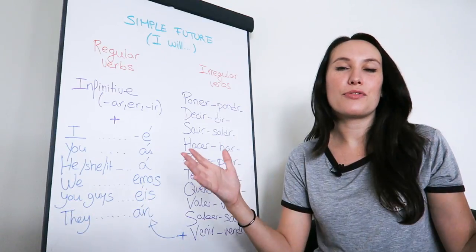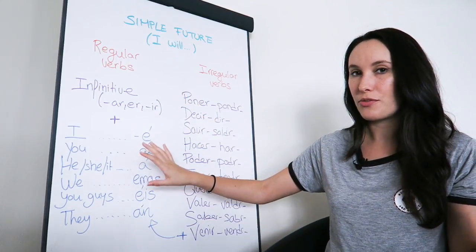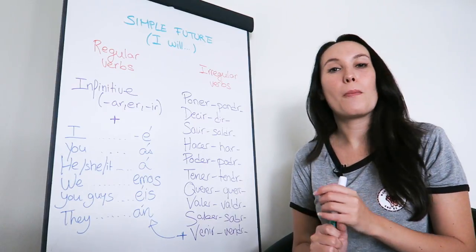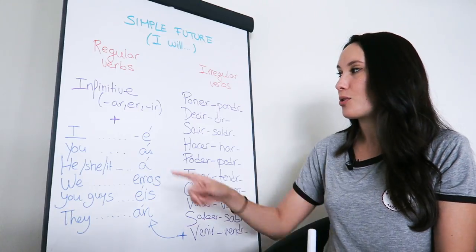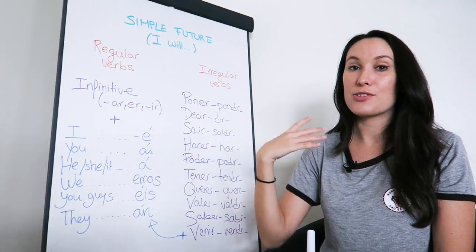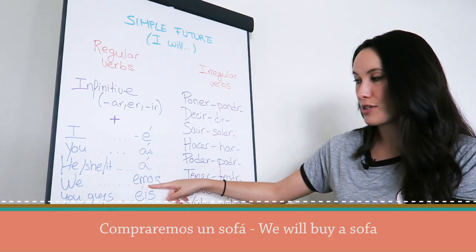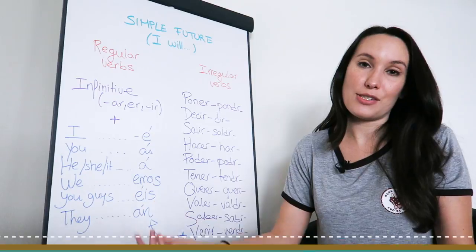And if I were going to use a verb in future, regular verb in future, in a sentence, I can say for example, compraremos un sofá. Comprar, also an AR verb, means to buy. Compraremos, emos is the we form. So we would buy un sofá, a sofa.